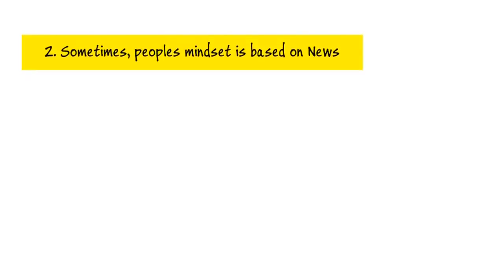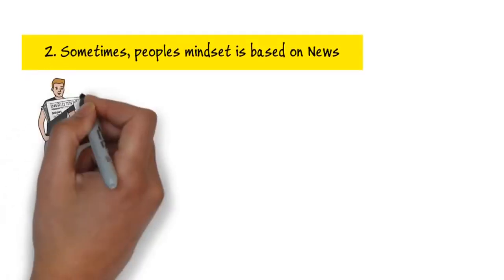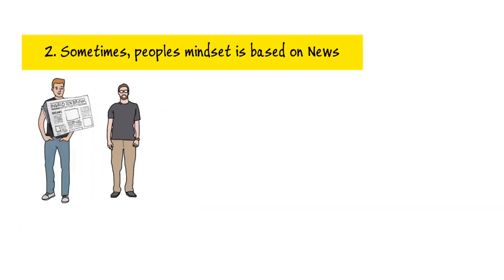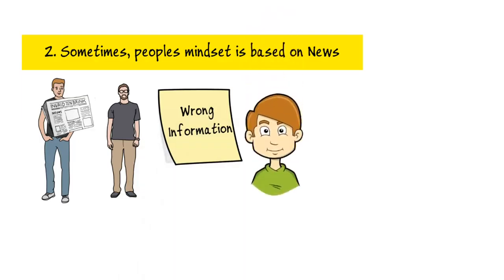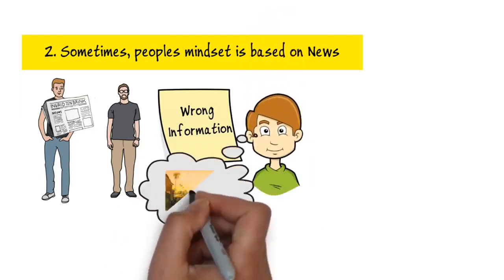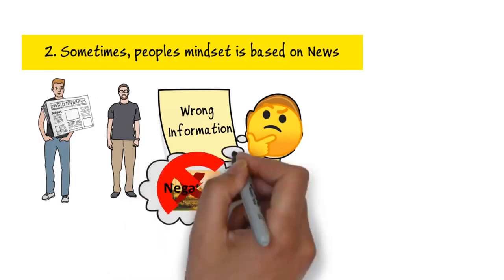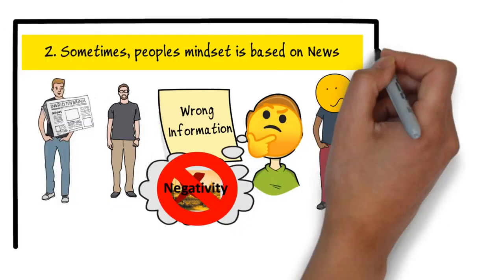Second is sometimes people's mindset is based on news. People after reading news think that they have knowledge of current affairs, but sometimes it is not proper information which they have got, and they behave based on the news. For example, suppose you have read that in your state a particular place is not worth visiting. You will think about its negative side and there are chances that you may behave based on that.